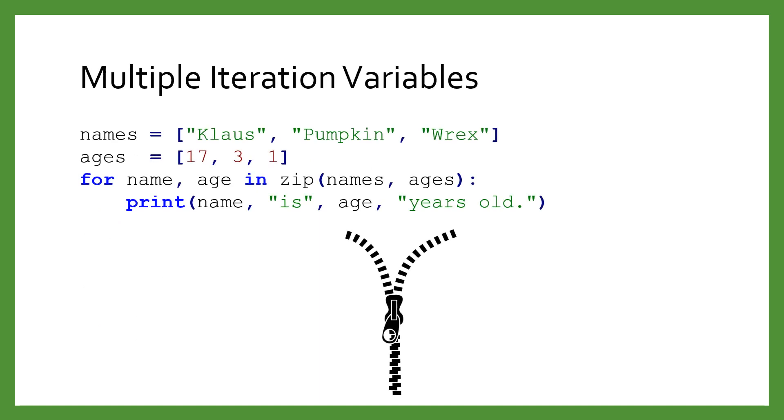Tuples can also be used for multiple iteration variables. We actually saw this previously when we iterated over dictionaries, and the .items method returned a key and a value pair. This pair was actually a tuple, so we had two variables to store each value.